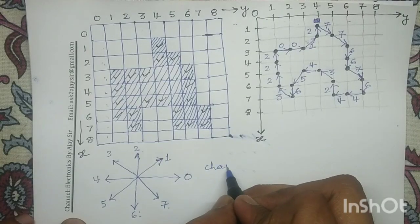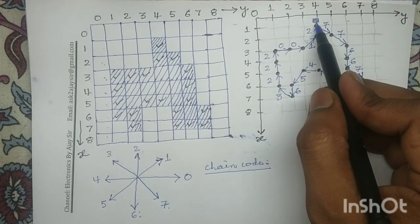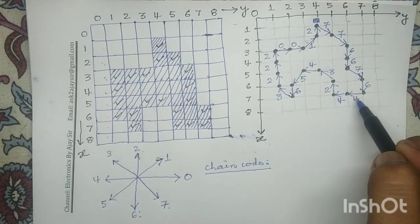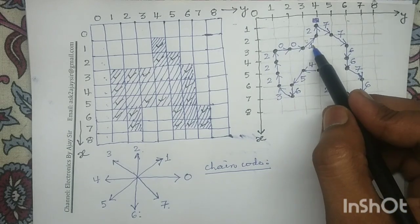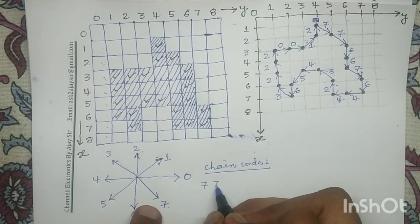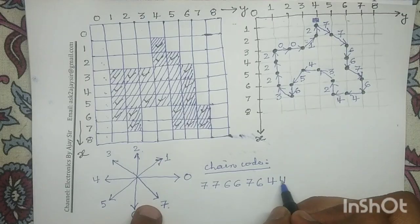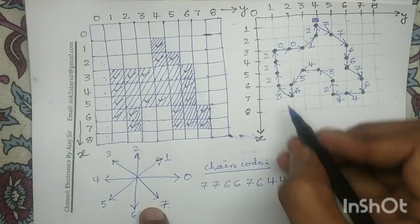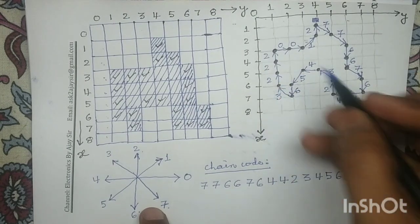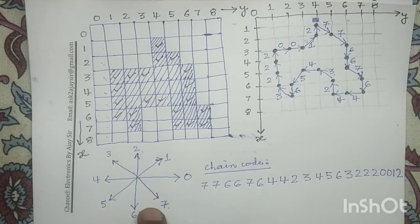Now it's time to write the chain code. This is our starting point, so the chain code becomes: 7, 7, 6, 6, 7, 6, 4, 4, 2, 3, 4, 5, 6, 3, 2, 2, 2, 0, 0, 1, 2. And with this, this question is over. Thank you.